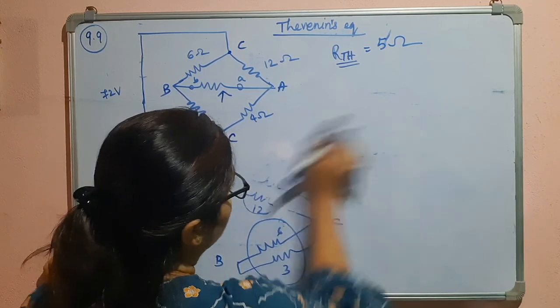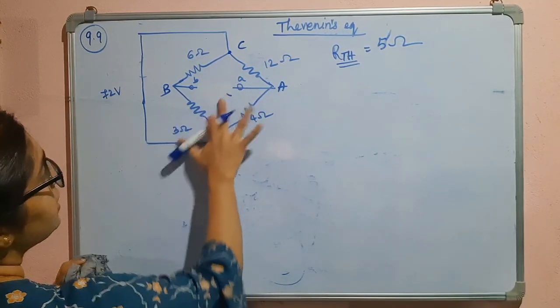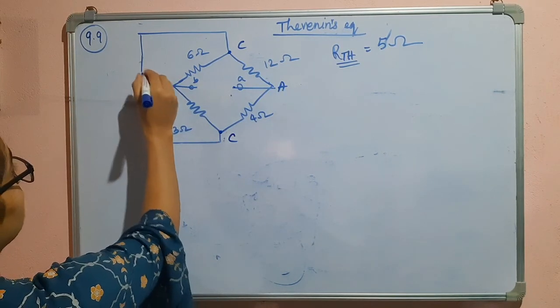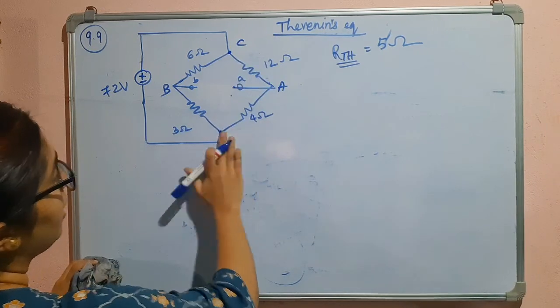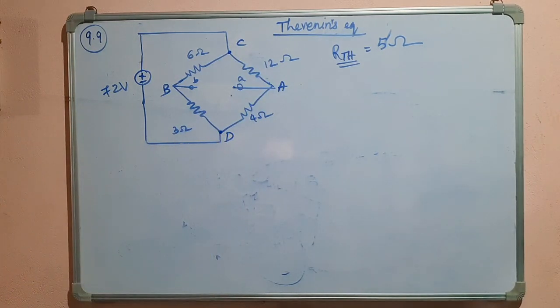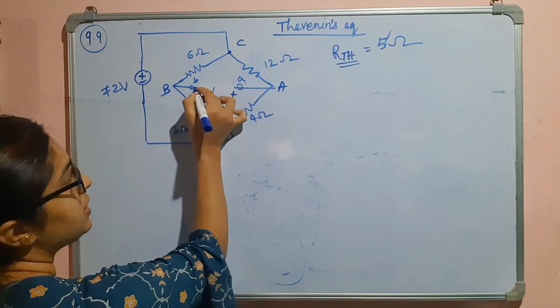Now to find out the open circuit voltage, what we will do is once again we will open this and we will place this 72 volt voltage source. Now we have this as C and this as D. We have to find this voltage, plus minus VTH, because A is here, B is here.